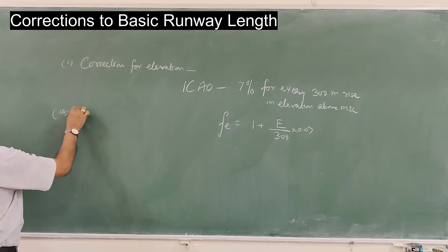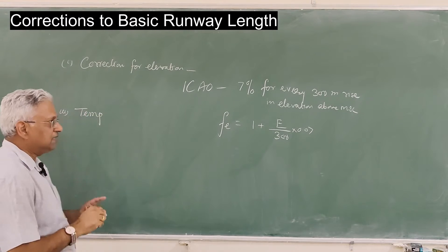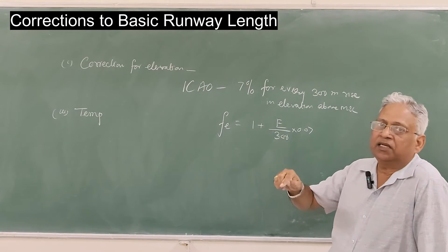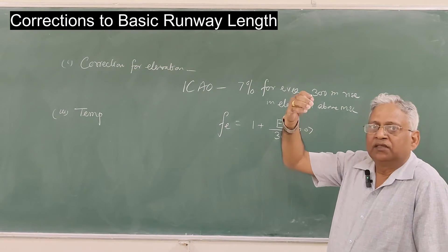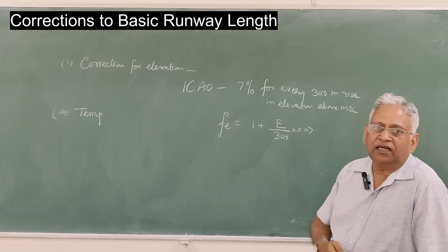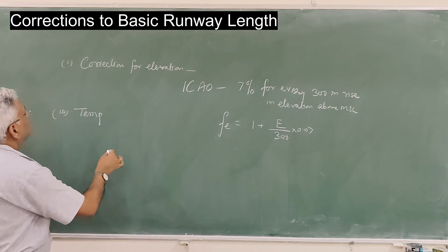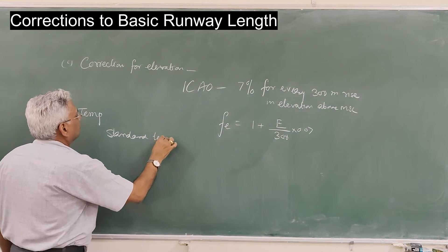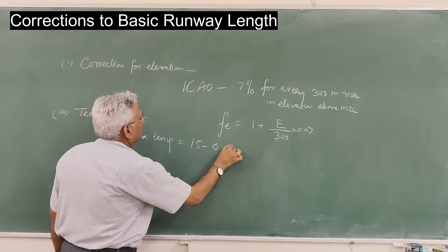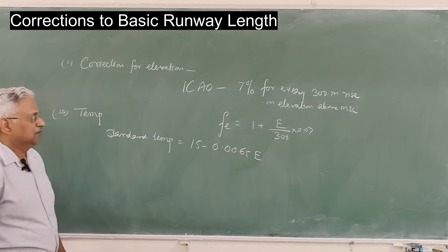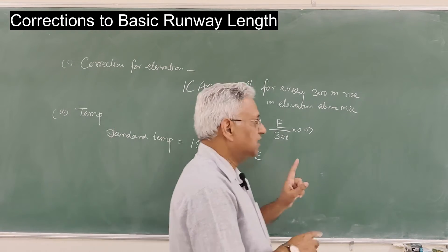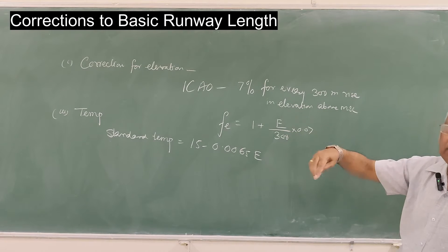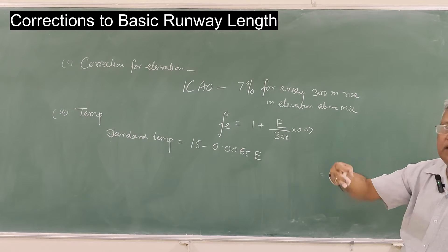The second correction is for temperature. Basic runway length is defined for a standard temperature of 15°C at mean sea level. This standard temperature also changes with the elevation of the airport — the standard temperature at the airport site is 15 minus 0.0065 times E, where E is the elevation. The effect of temperature is the same as elevation: as temperature rises, air density reduces and that reduces lift on the aircraft.